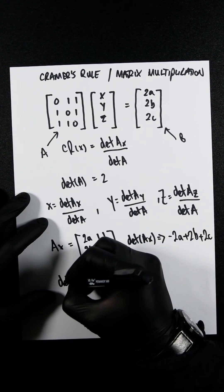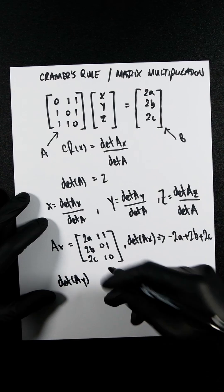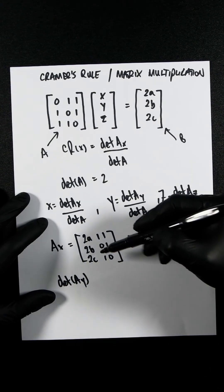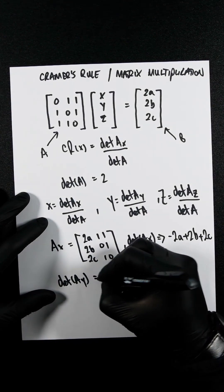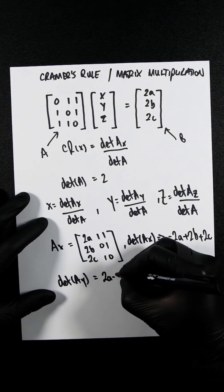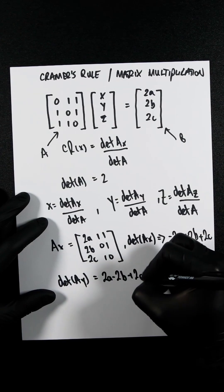So then let's now do the determinant of Ay. We do the exact same thing as we did here, but instead we replace this column in the second column. So you're now going to get 2A minus 2B plus 2C.